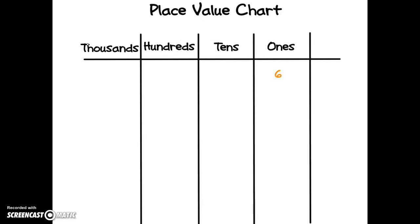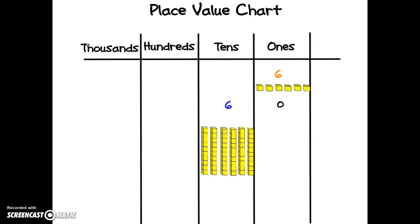Let's look at an example. Here I have six ones and six tens. Now you might look at the sixes and think they're equal but they're really not. Six ones looks like this and six tens looks like this. Really sixty equals ten times six, so six tens is equal to sixty ones.